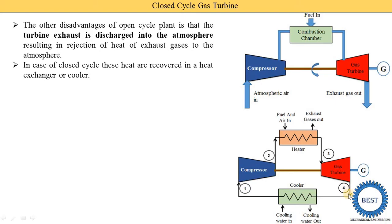After the turbine, we install one component called the cooler. It reduces the temperature of the exhaust working fluid coming out from the turbine. For reducing the temperature of the working fluid, cooling water is supplied in the cooler and then the cooling water exits. The working fluid coming out from the turbine is passed inside the tubes and the water is outside the tubes. Water absorbs the heat energy from the working substance, so the temperature of the working substance is reduced, and this working fluid is supplied to the compressor.